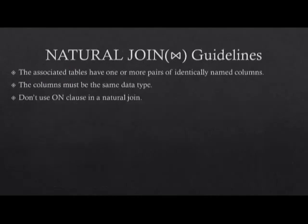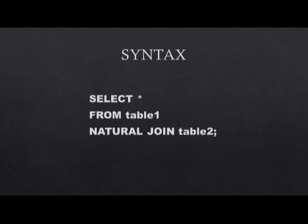These are the guidelines for natural join: the associated tables must have one or more pairs of identically named columns, the columns must be the same data type, and we don't use the ON clause in natural join. The syntax is: SELECT * FROM table1 NATURAL JOIN table2 followed by a semicolon.